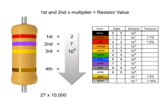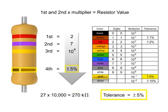Thus, the value of this resistor is 270 kilo-ohms with a tolerance of plus or minus 5%.